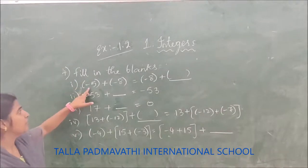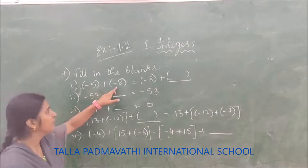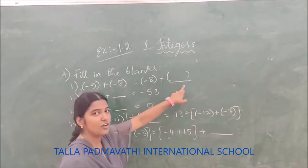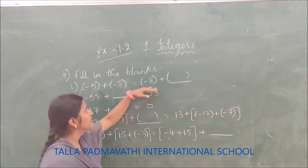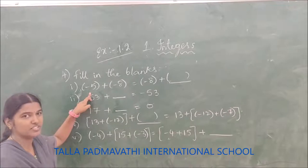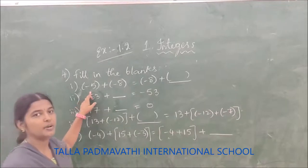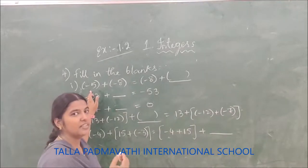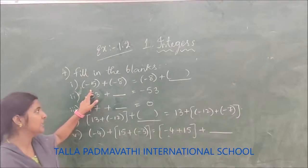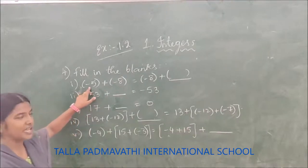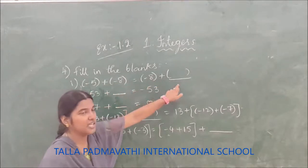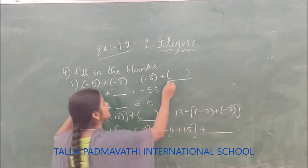See the first one — if you observe, minus 5 plus 0 minus 8 equals minus 8 plus 0 dash. This is nothing but the commutative property. What is commutative property? If you take A and B as any two integers, A plus B equals B plus A. Here A is minus 5.